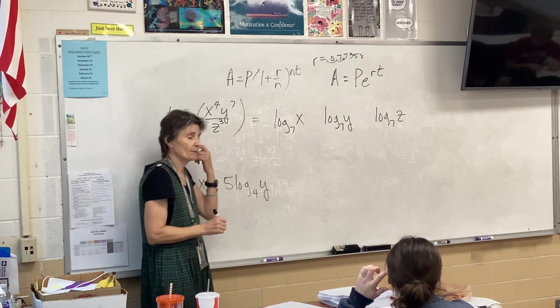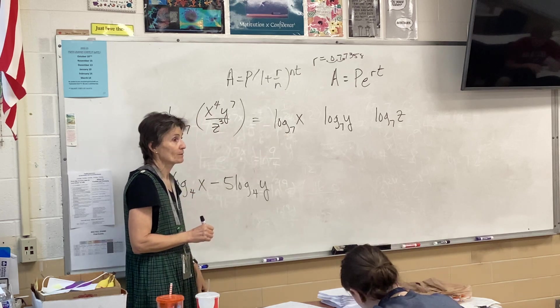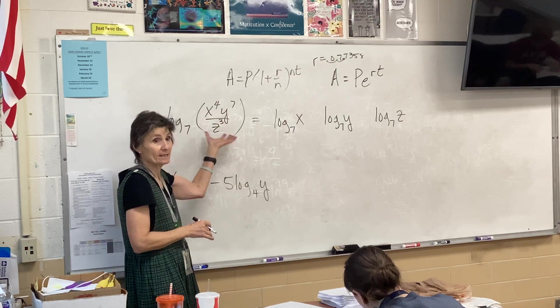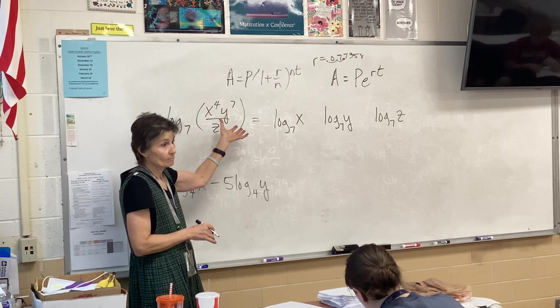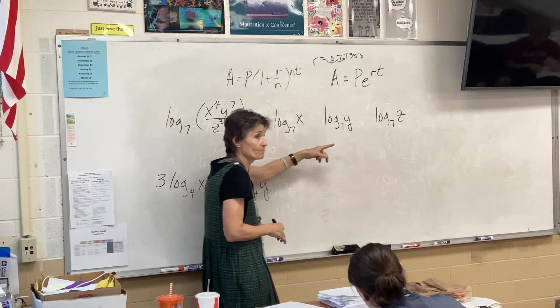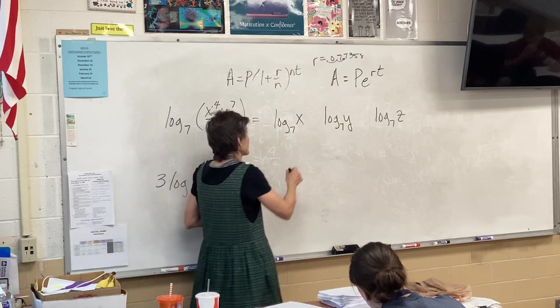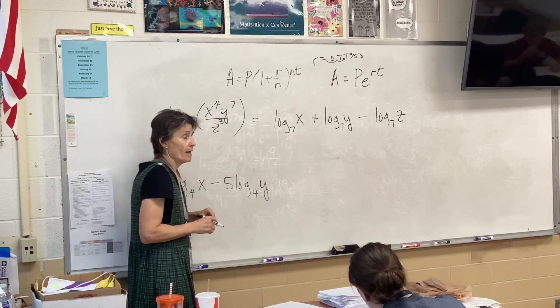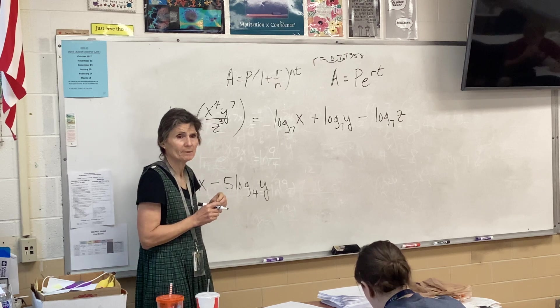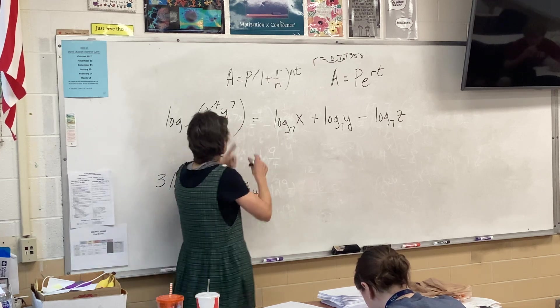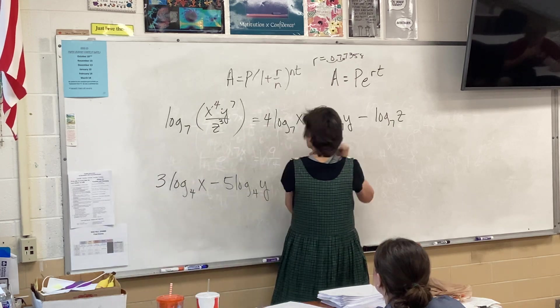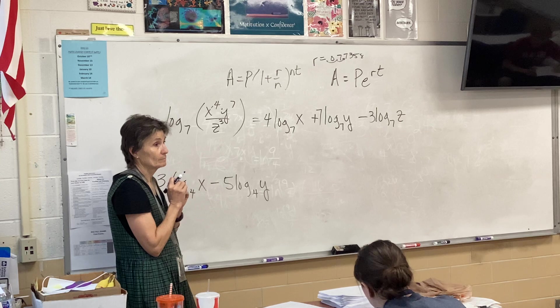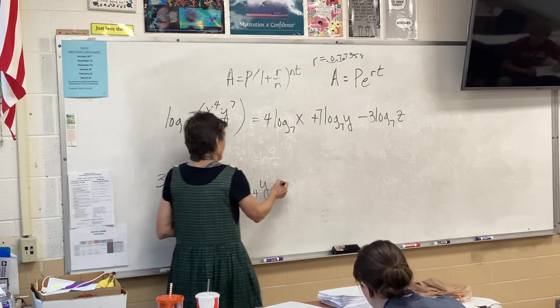When you expand, you're going to have a log for each letter. So I like to start by just writing them down. I'm going to have a log for x, y, and z. That's my expansion. So now I have to fill in everything else. So what am I going to fill in here? Well, what signs are going to go in between here? Let's start with that. These two are being multiplied, so that's going to be a plus. That's being divided, so that's going to be a minus. And then what happens with those exponents? Where do they show up? They show up out in front. So 4 log x, 7 log y, 3 log z. And that's it. That's expanded.